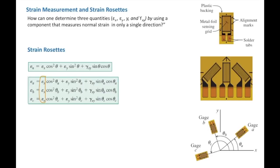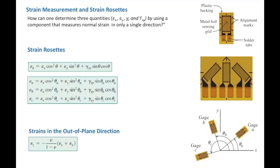How many unknowns do we have? We have εx, εy, and γxy — three unknowns. How many equations? Three. So we have three equations and three unknowns and we can solve it. That is how we determine the state of strain at a certain point. One more equation gives us the out-of-plane strain magnitude — it gives how much is strain in the z-direction, which we can determine using that equation.